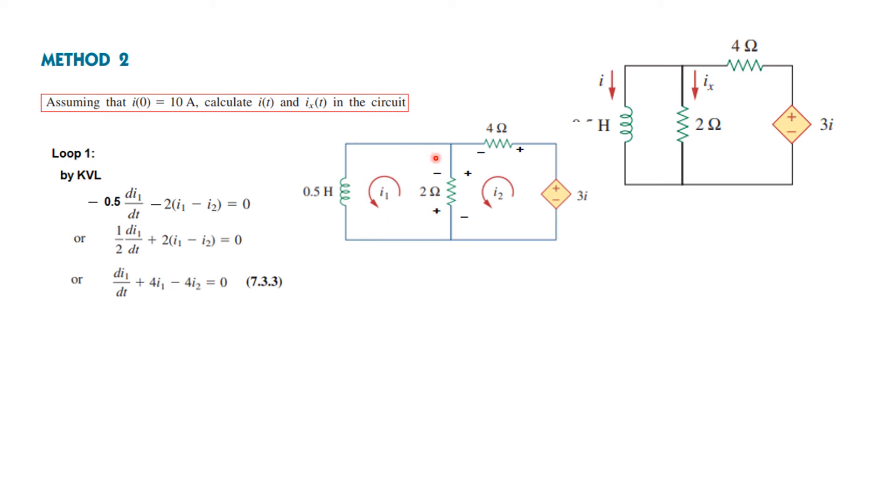For loop 1, the KVL equation going from here like this gives equation 7.33. Now we write the equation the same way for loop 2. From here we get I₂ = 5/6 I₁. Put this value of I₂ in this to go further.